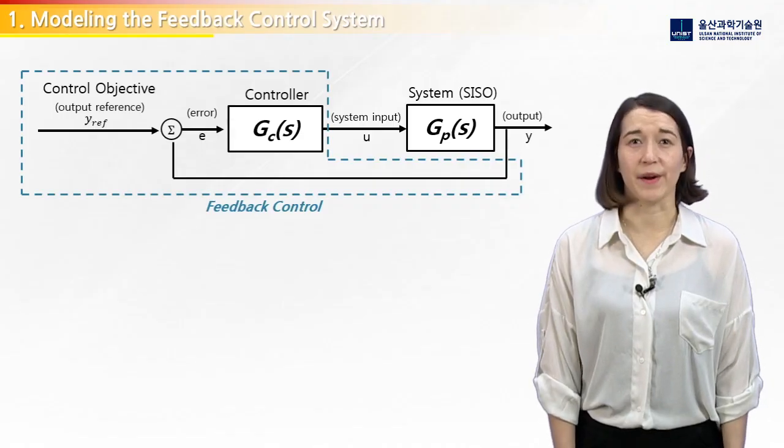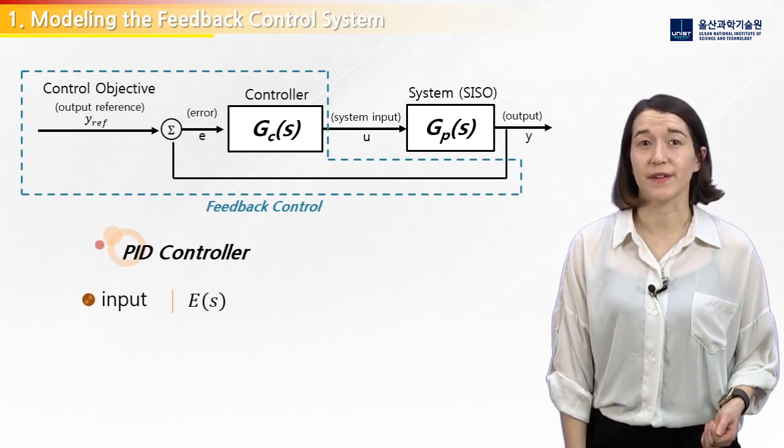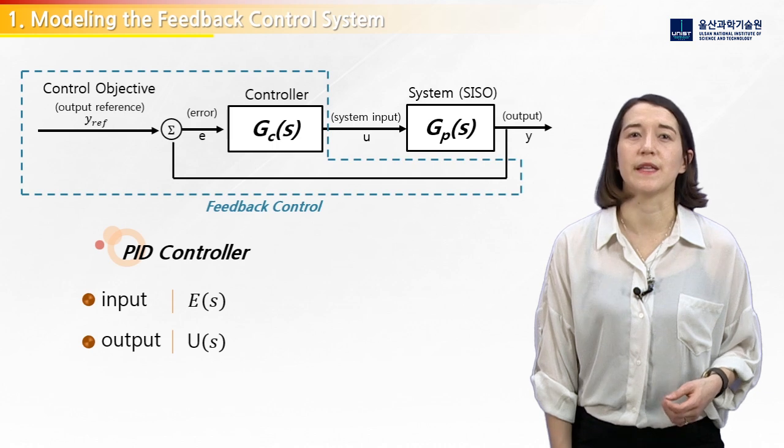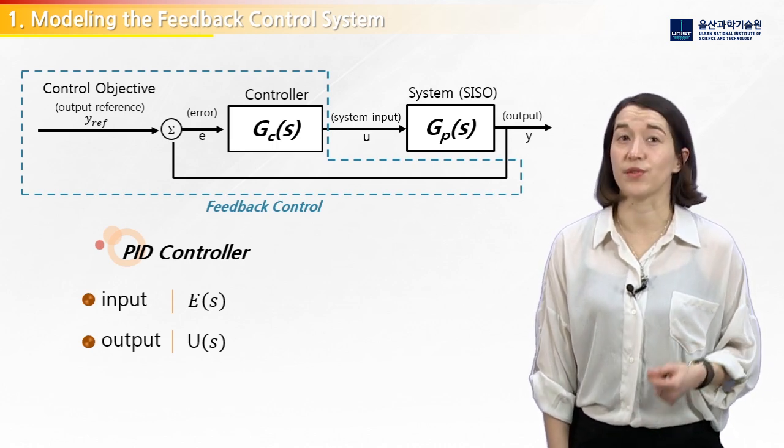From the feedback control diagram, we can see that the input to the controller is the error, E of S, and the output is the input to the DC-DC converter, U of S, which is the duty ratio.